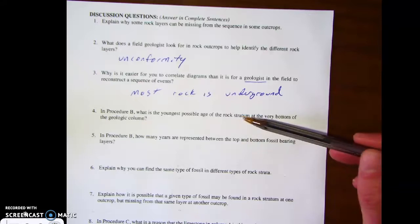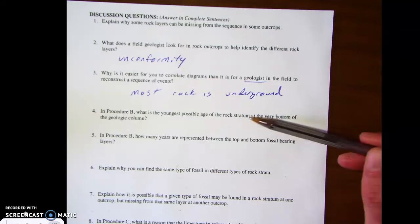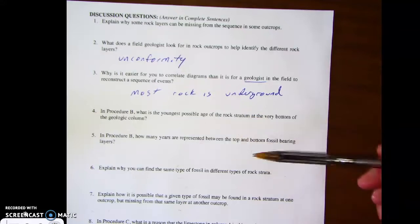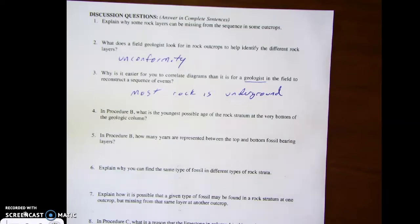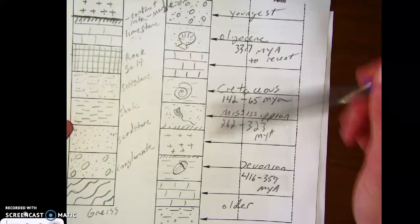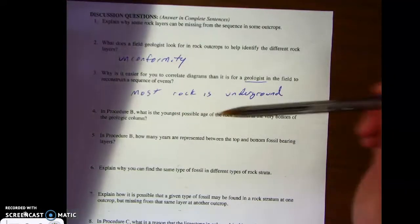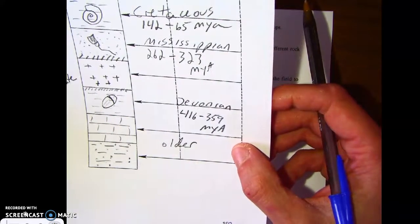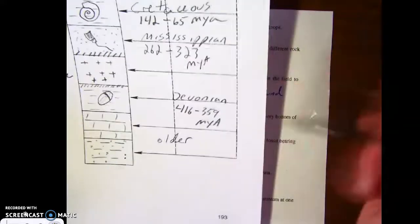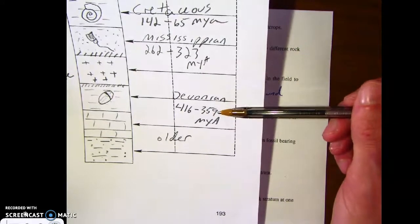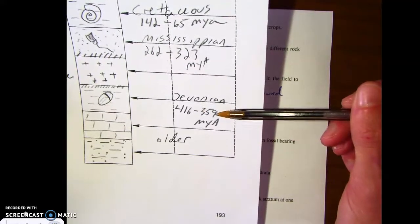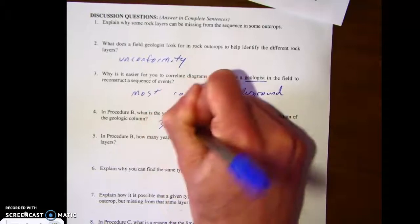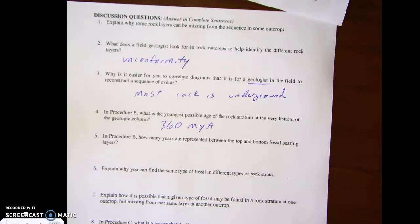For number four, it says in procedure B, what is the youngest possible age of the rock stratum - stratum is just layer - at the very bottom of the geologic column. Well, if we go back to that for a minute, procedure B is this one where we put the age of the fossils on. At the very bottom of the column, if the Devonian was between 416 and 359, then the youngest below that would be 360 million years. That's the youngest possible age. It's quite probable it's much older than that.